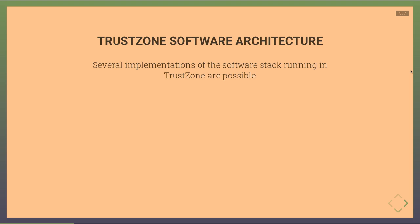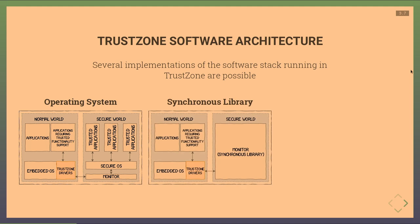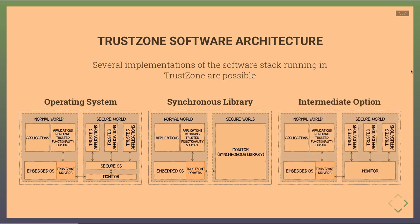In the secure world you can have a full-fledged OS running with a secure OS that loads trusted applications — as found on Samsung's and Qualcomm's devices. A lighter solution uses a synchronous library as a secure API for cryptographic operations with secret keys stored in the secure world, used for example by the Nintendo Switch. The ARM documentation also describes intermediate options, though these are rarely seen in practice.